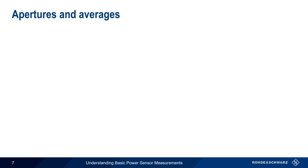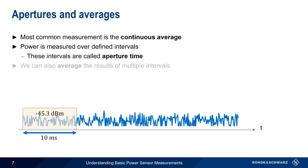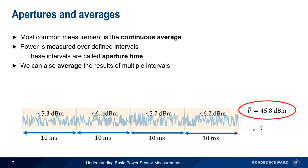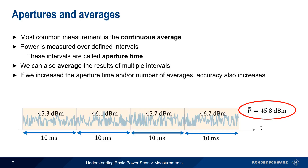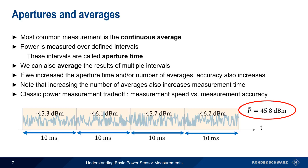After zeroing the sensor, we reconnect to the source and execute the measurement. Most of the time, power sensor results will be displayed continuously, or what's called a continuous average. Essentially, this means that power is measured over defined intervals called aperture time. We can also average the results from multiple intervals. Aperture time and average count are important parameters because increasing aperture time and/or the number of averages also increases the accuracy of our measurement. However, increasing the number of averages also increases the time it takes to get a measurement — this is the classic tradeoff in power measurement: measurement speed versus measurement accuracy. In other words, the longer we measure, the more accurate our measurement result.